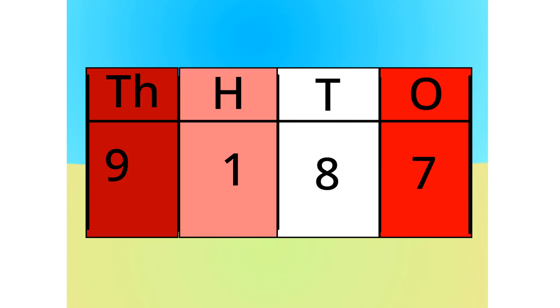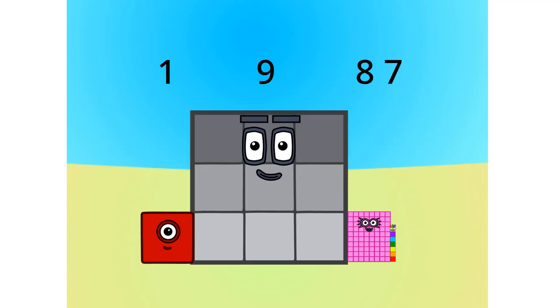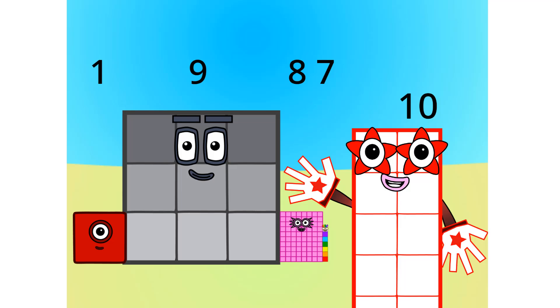First off, the number table. Let's do 1987 for example. Do you see anything that relates to this number? Let's split it into its units. This number is made up of one thousand, nine hundreds, eight tens, and seven ones. See? Let's see this in block form, shall we? As you can see, this number is one thousand, nine hundreds, eight tens, and seven ones.